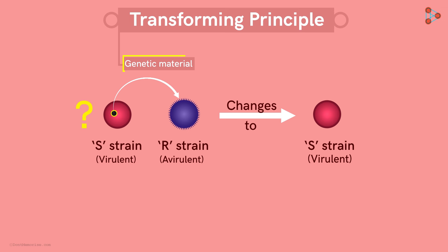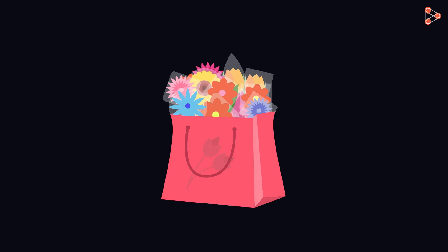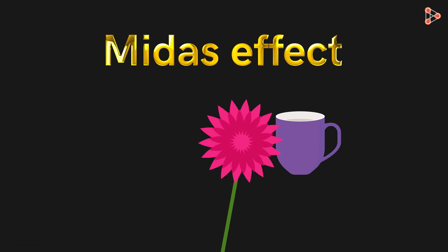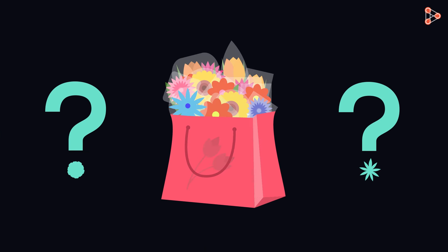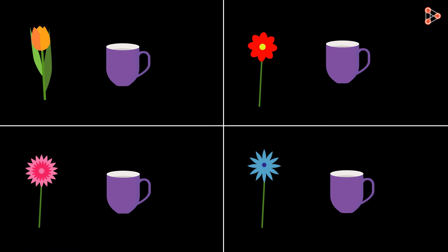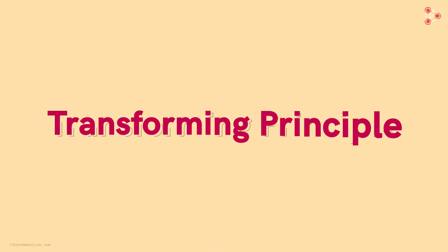Was this really the genetic material, or was it something else? Let's find that out. Imagine we are given a bag full of flowers, and we are told that there is one flower which has the Midas effect — anything that the flower touches gets transformed into gold. But how will we find out which flower is the special one? All the flowers look more or less the same. The only thing we can do is make each flower touch some object — examining every individual flower is the only option. This story was similar in the case of the transforming principle.